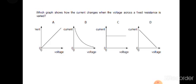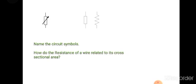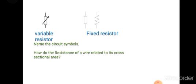Which graph shows how the current changes with voltage across a fixed resistance? A fixed resistor is an ohmic material, and ohmic materials have straight-line graphs. Name the circuit symbols: this symbol is a variable resistor and these symbols are for fixed resistors.